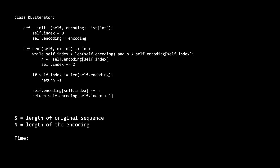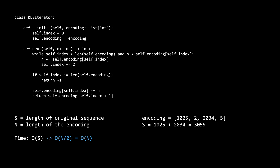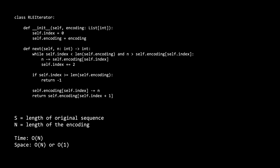If you understand the brute force solution, this improved solution should be pretty straightforward. Our time complexity has now changed from O(s) to O(n/2), which is equivalent to O(n). This is an improvement because in most cases, the length of the encoding n is going to be significantly smaller than the length of the original sequence. For example, with our encoding, the length of the original sequence is going to be 1025 plus 2034, which is 3059 — as opposed to O(n/2), which is 2. Our space complexity has remained unchanged: still constant space if you don't consider the input array, or O(n) space if you do.